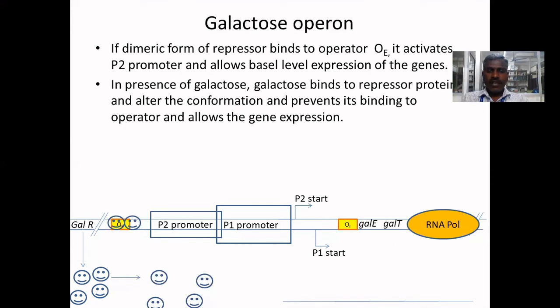In presence of galactose, galactose binds to repressor protein and alters the conformation and prevents its binding to operator and allows the gene expression.